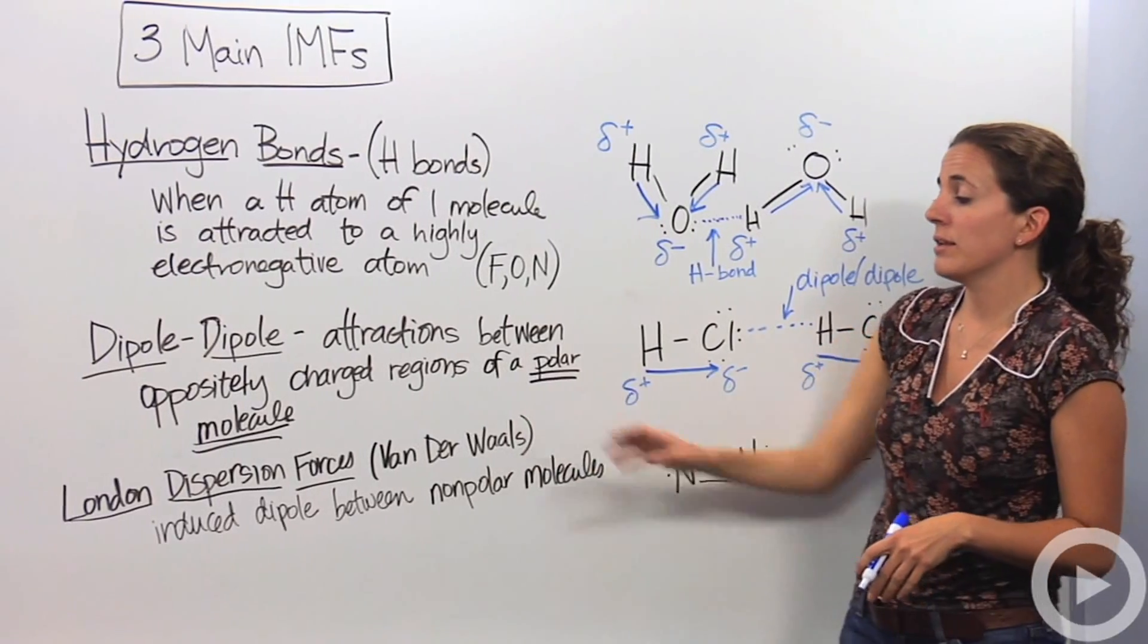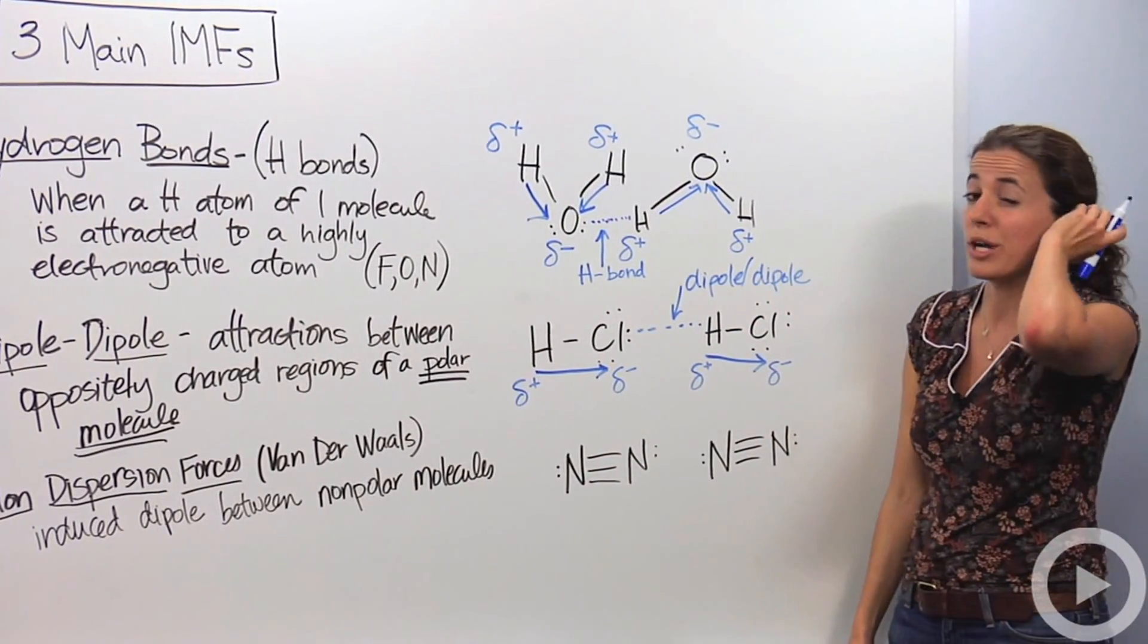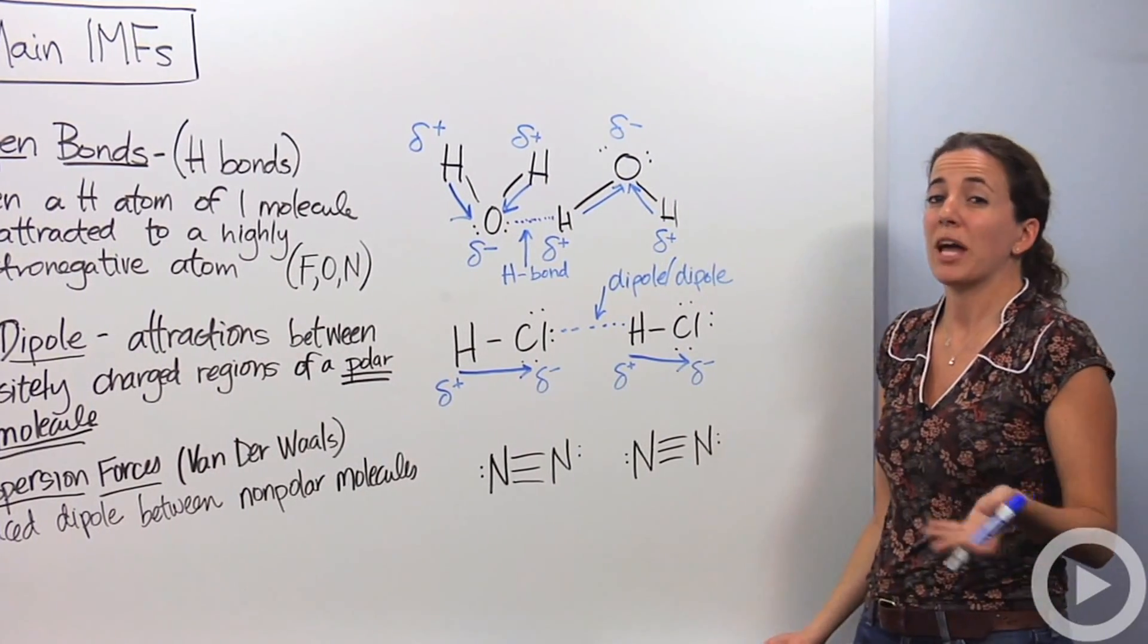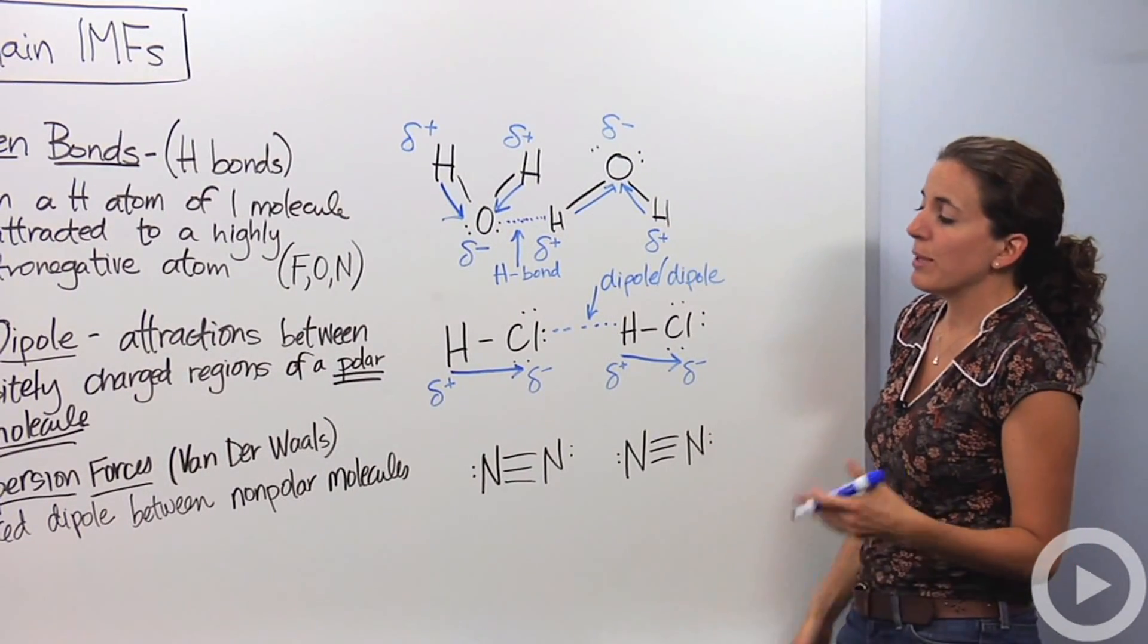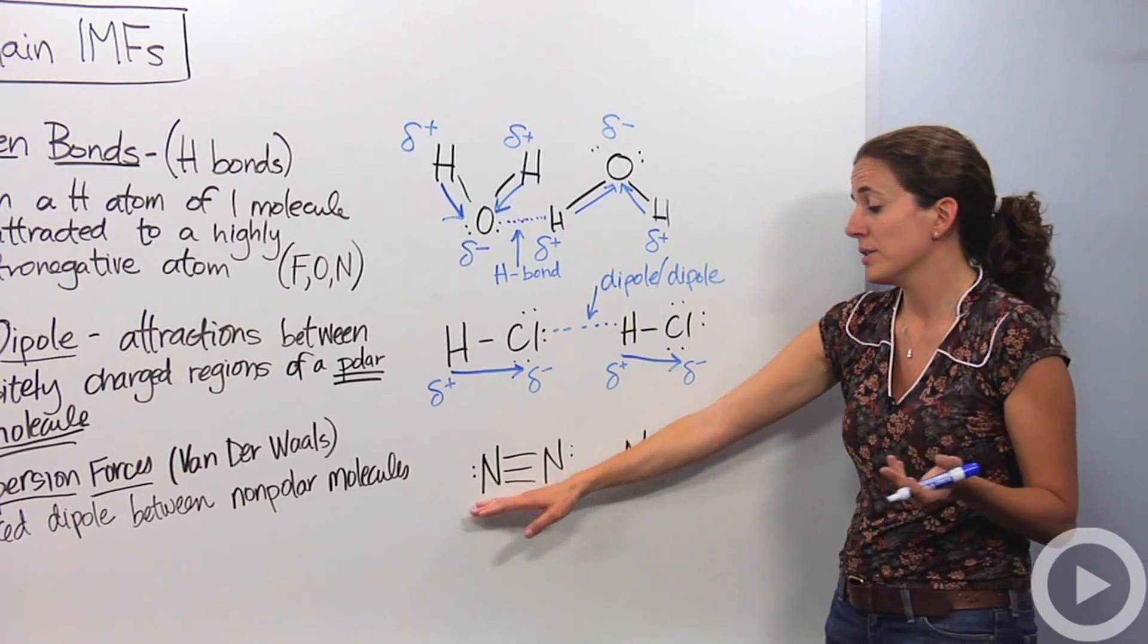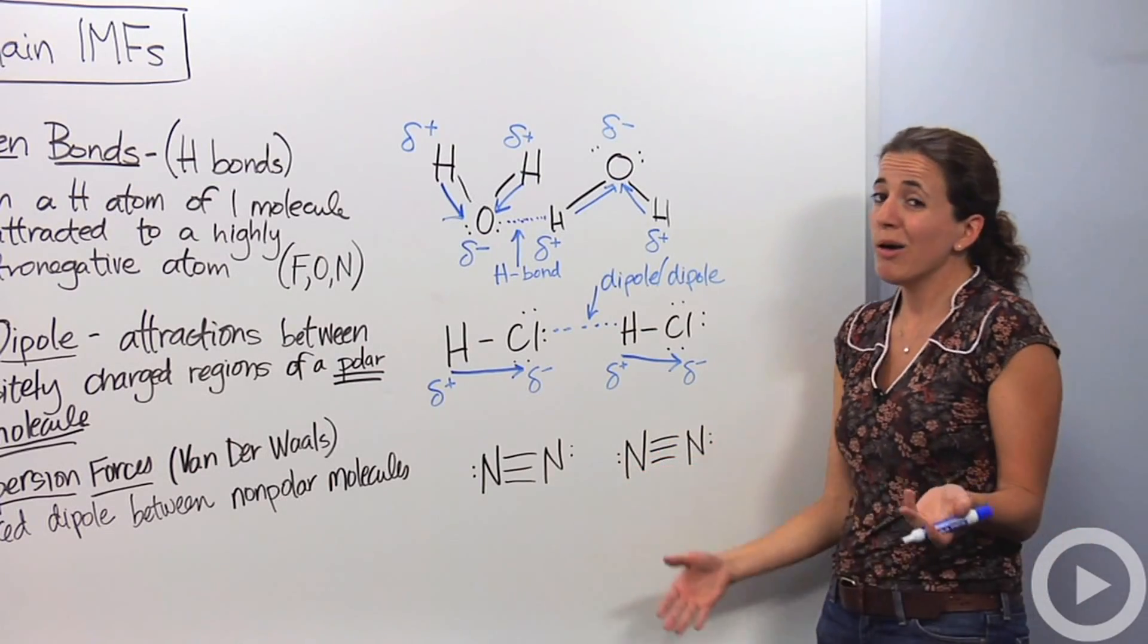The last one is the London dispersion. You might have known that as Van der Waals forces. It's or induced dipole. That might be something that you've heard before. Induced dipole. When something's induced, we kind of force it to be a certain way. So it's to be called induced dipole between two non-polar molecules. So here is nitrogen that's non-polar. Electrons are going to be equally shared among this nitrogen as they are in this nitrogen. However, we do know that electrons are constantly moving.